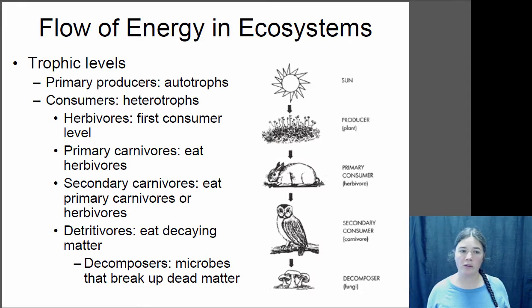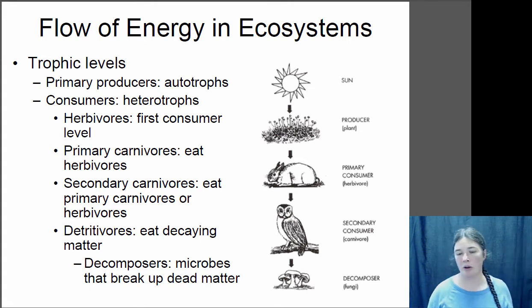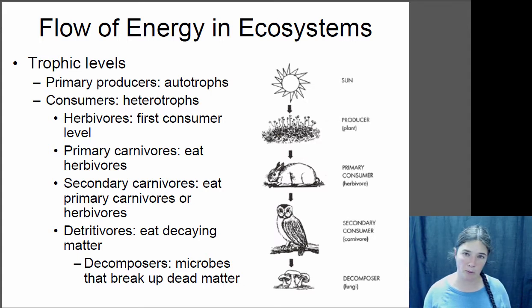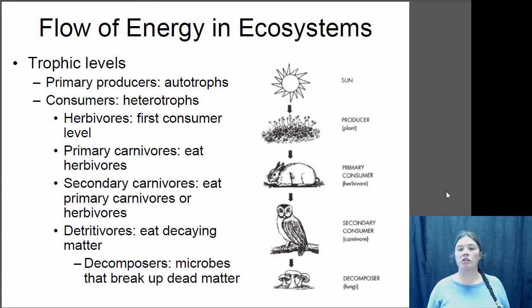All of your consumers eat those producers. Primary consumers are herbivores — they eat producers, they eat plants generally. They get their energy from the energy harvested by the producers. Then you have secondary consumers, or primary carnivores, which eat herbivores. Then you can have secondary carnivores, also called tertiary consumers, which eat other carnivores. Finally, you have detritivores, which eat dead and decaying material. All the energy these organisms use is ultimately coming from the Sun — this passing of energy from one level to another is the food chain.